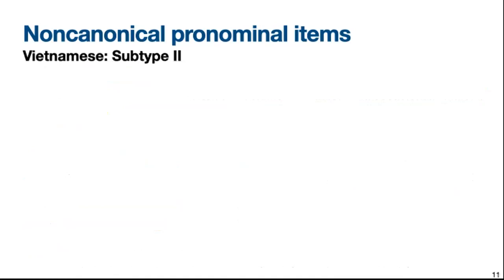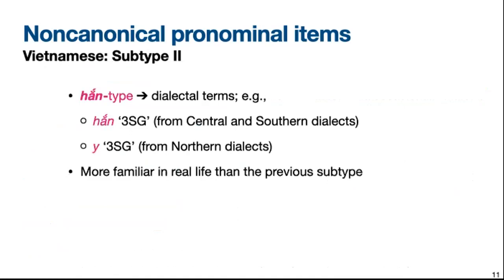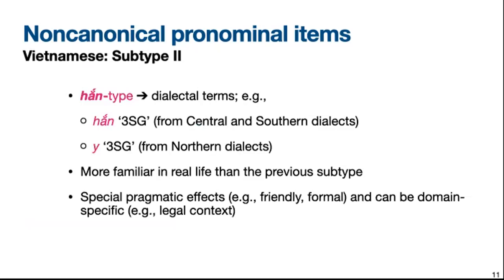Moving on to the second subtype, this is what we refer to as the hắng type in Vietnamese. These are dialectal terms that are more prevalent in real-life usage than in the previous subtype. Some examples include hắng and ả, from Central, Southern, and Northern dialects respectively. Similarly to the first subtype, these terms encode very specific pragmatic effects, such as friendly or offensive for hắng depending on the context, and whether it's formal or informal. The term e, in particular, is specific to legal discourse only, and you see it more prevalently in that domain.